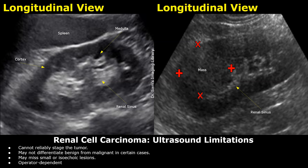While ultrasound is less specific than CT or MRI for characterizing renal masses, it can still provide valuable diagnostic clues. Ultrasound has limitations in evaluating renal cell carcinoma as it cannot reliably stage the tumor, and may not distinguish benign from malignant lesions.